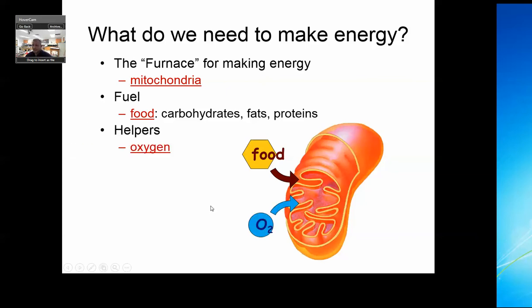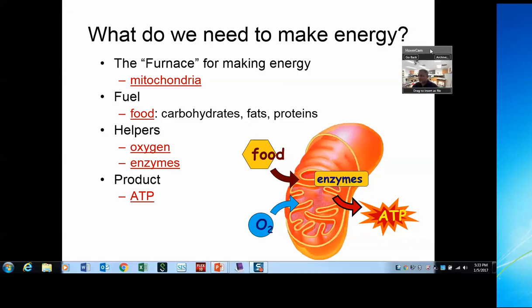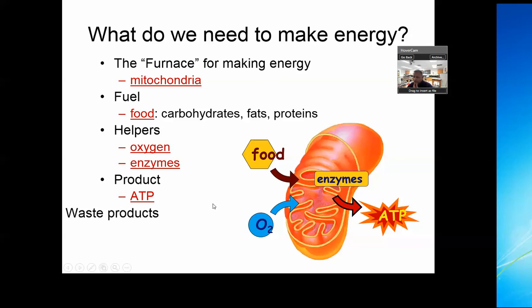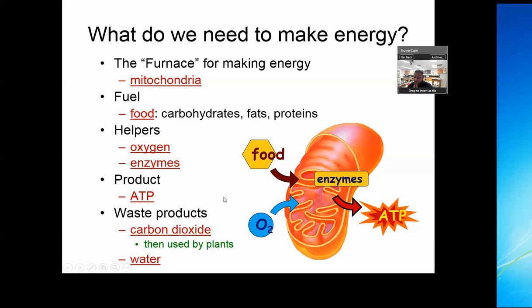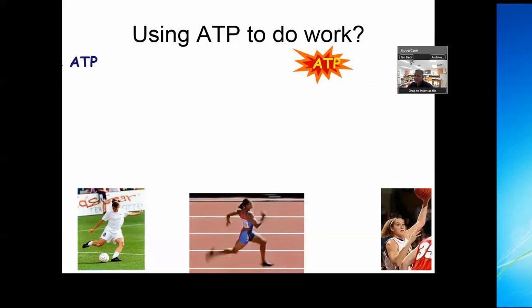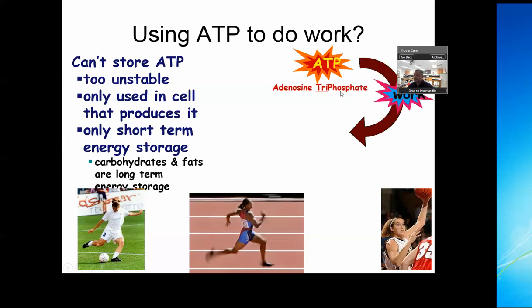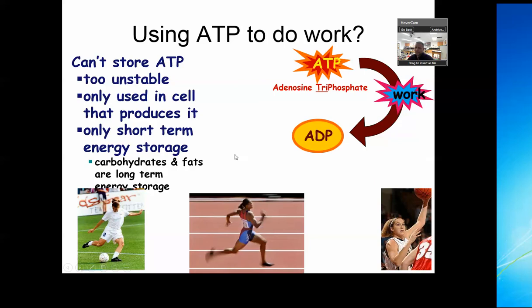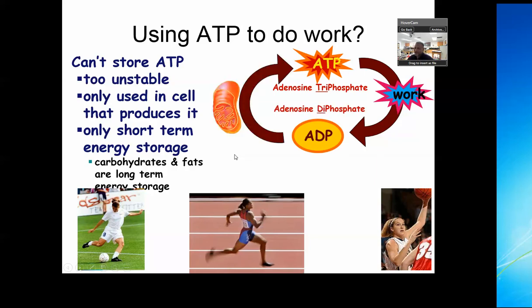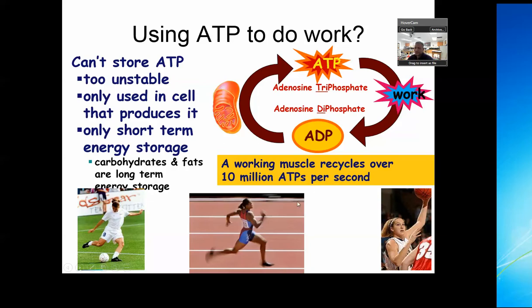If you have oxygen, you're going to completely break down that glucose. It requires some enzymes, and the real goal is to get ATP. We give off carbon dioxide, which plants are going to use for photosynthesis. ATP allows our cells to do work — that's the ultimate source of energy for cells. Your muscles consume 10 million ATP per second, which is why you've got to keep adding fuel, which is what your food is.